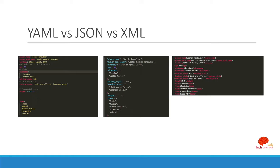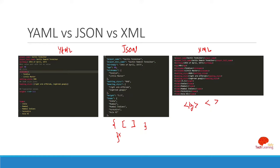Now let's compare YAML with JSON and XML. We have the same document represented in all three formats. In YAML the structure is very readable and easy to write. In JSON you have to define curly brackets and square brackets — forgetting even one will throw an error. In XML, key values are separated as tags with opening and closing. So XML and JSON are comparatively more difficult to read and write because of their defined structure, while YAML is comparatively easier.